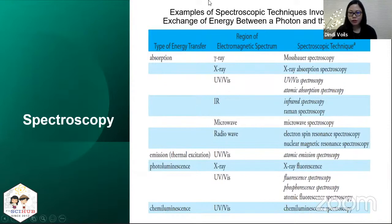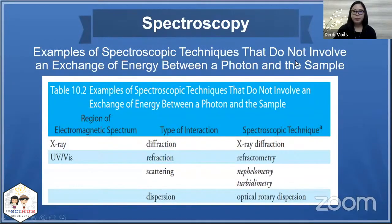So these techniques involve energy change, exchange, and the type of energy transfer can be absorption, emission, photoluminescence, and chemiluminescence. Because of time, we will only be talking about UV-VIS and IR spectroscopy. These are the common ones that you use for analytical applications. So you have UV-VIS spectroscopy, atomic absorption, and infrared.